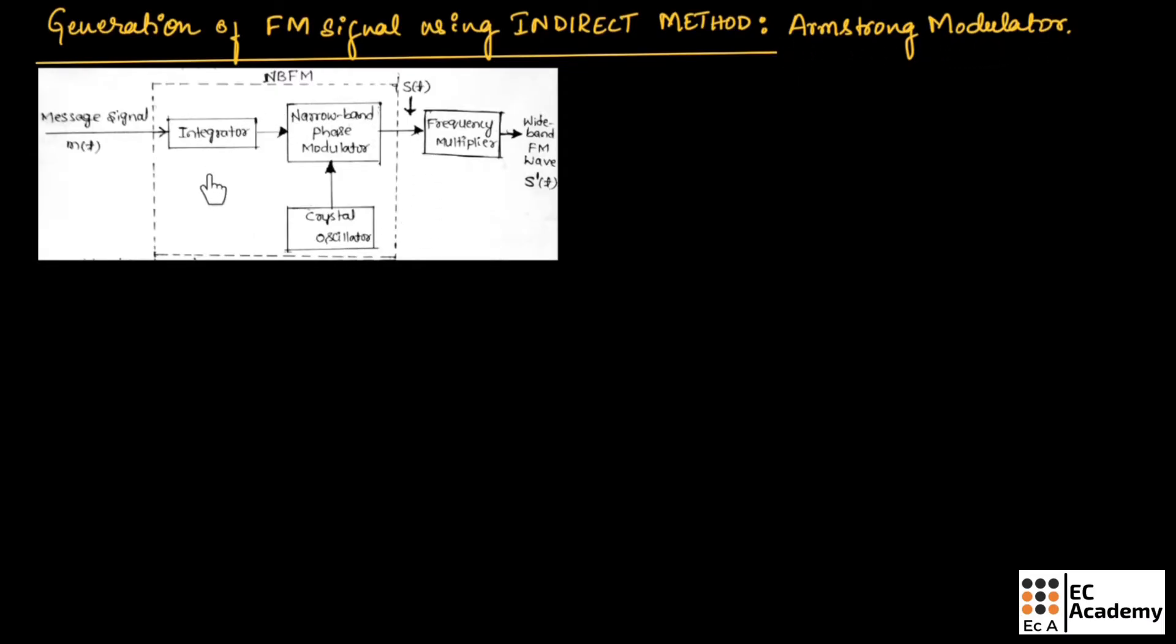This is the simplified block diagram of indirect FM system. In this method, the message signal is first used to produce the narrow band FM. Then this signal is applied to frequency multiplier to increase the frequency deviation to the desired level.